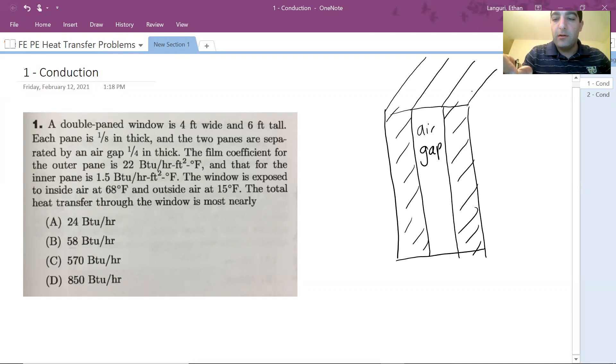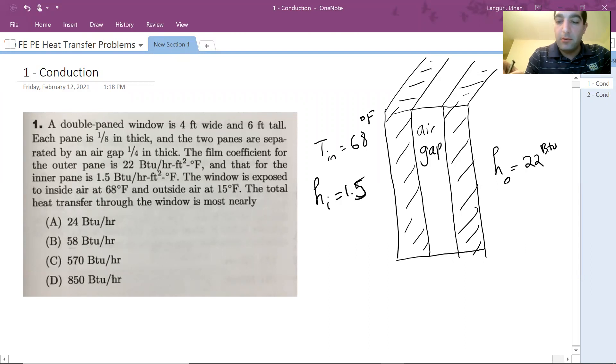Inside temperature is 68°F. So let's say T inside is 68. And H, the heat transfer coefficient inside, H sub i was given as well. The film coefficient for the inner pane is 1.5 BTU per hour foot squared Fahrenheit. Outside, H sub o is 22 BTU per hour foot squared Fahrenheit. And T outer is given at 15°F.